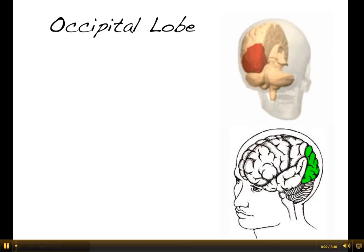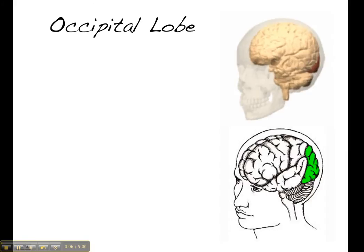The occipital lobe, as the name suggests, has to do with our eyesight.